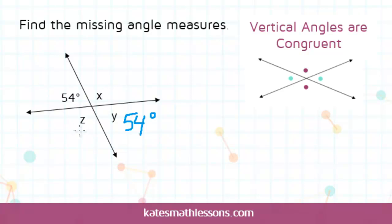Now to find the other two, we know that x and z are going to have the same angle measure, but we don't know yet what that angle measure is. To find it, we can look at this 54 and the x.